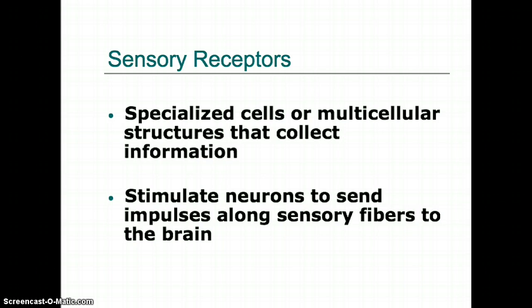What are receptors? They are specialized cells or multi-celled structures that collect information — think of them as little landing sites. Those landing sites vary based on what they're going to be stimulated by, whether it be touch, temperature, pain, light, and so on.